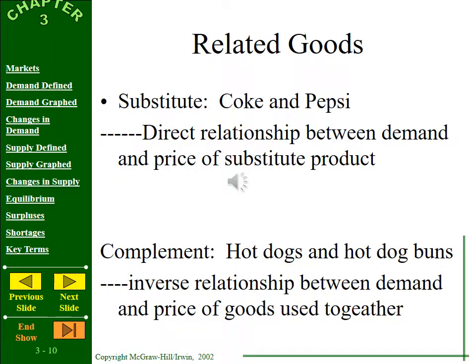Related goods are goods where a change in the price of one causes the demand curve of the other to change. Substitutes like Coke and Pepsi have a direct relationship — if the price of Coke rises, quantity demanded of Coke falls but demand for Pepsi rises. Complements like hot dogs and hot dog buns have an inverse relationship — if the price of hot dogs goes up, demand for hot dog buns goes down.